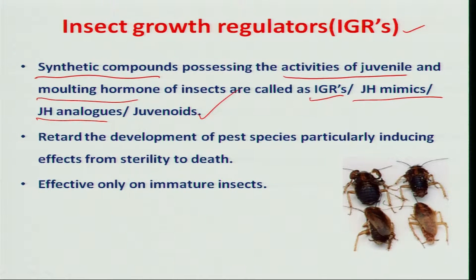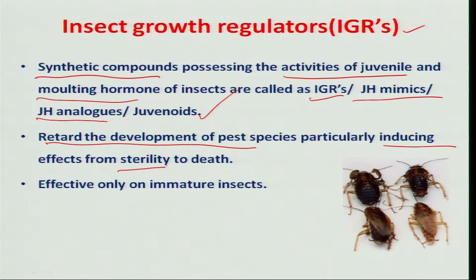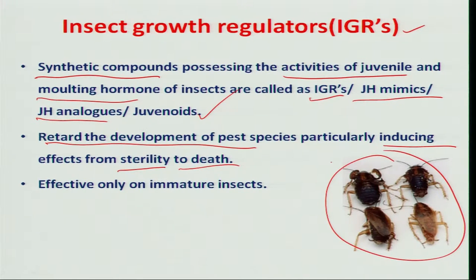These insect growth regulators retard the development of pest species, particularly by inducing sterility and ultimately causing the death of the insects. They are mainly effective on immature insects.